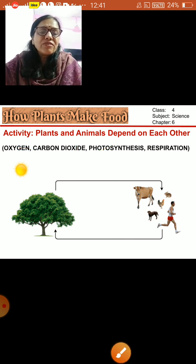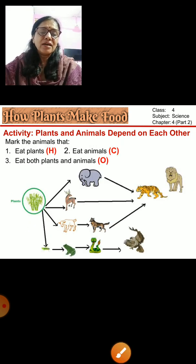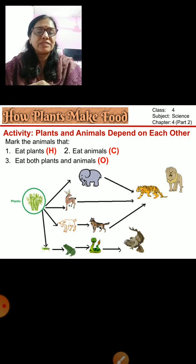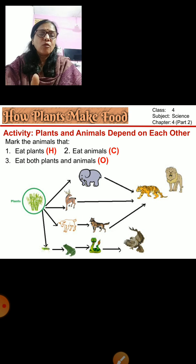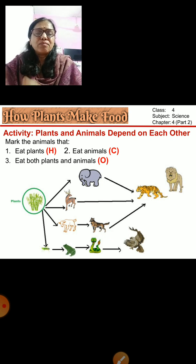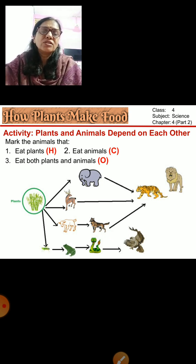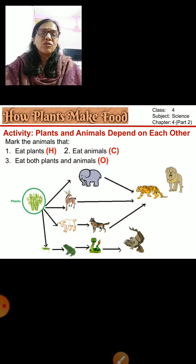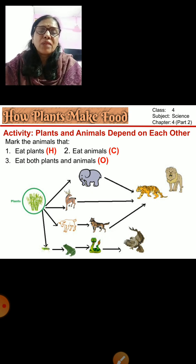Here is one more activity showing how plants and different types of animals are dependent on each other. Some animals eat plants — they are herbivores. Some eat only animals — they are carnivores. While some eat both plants and animals — they are omnivores.